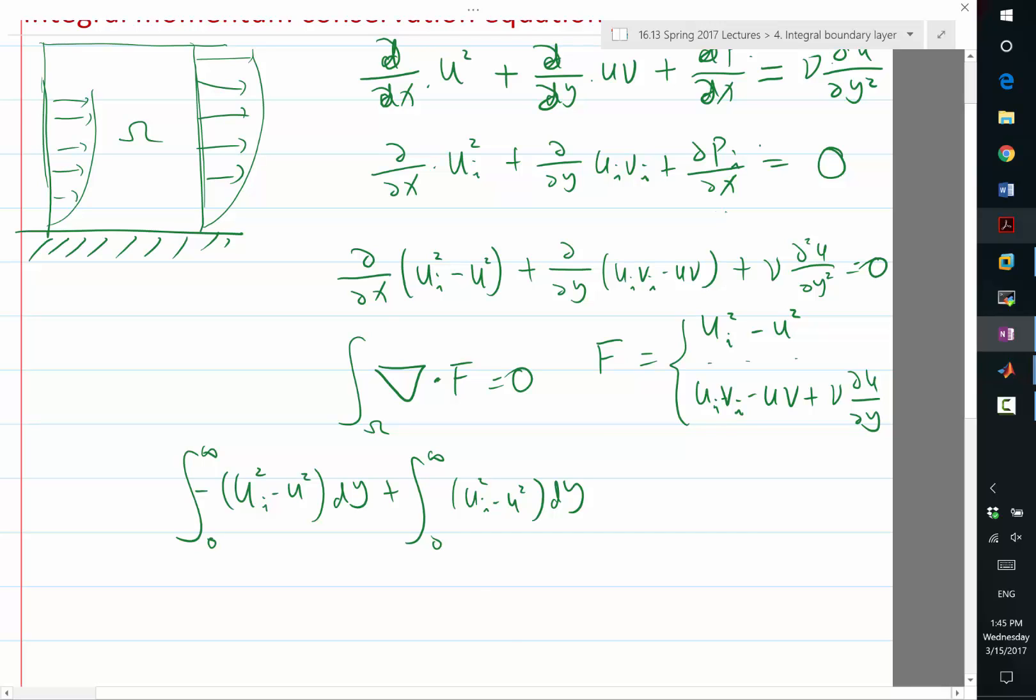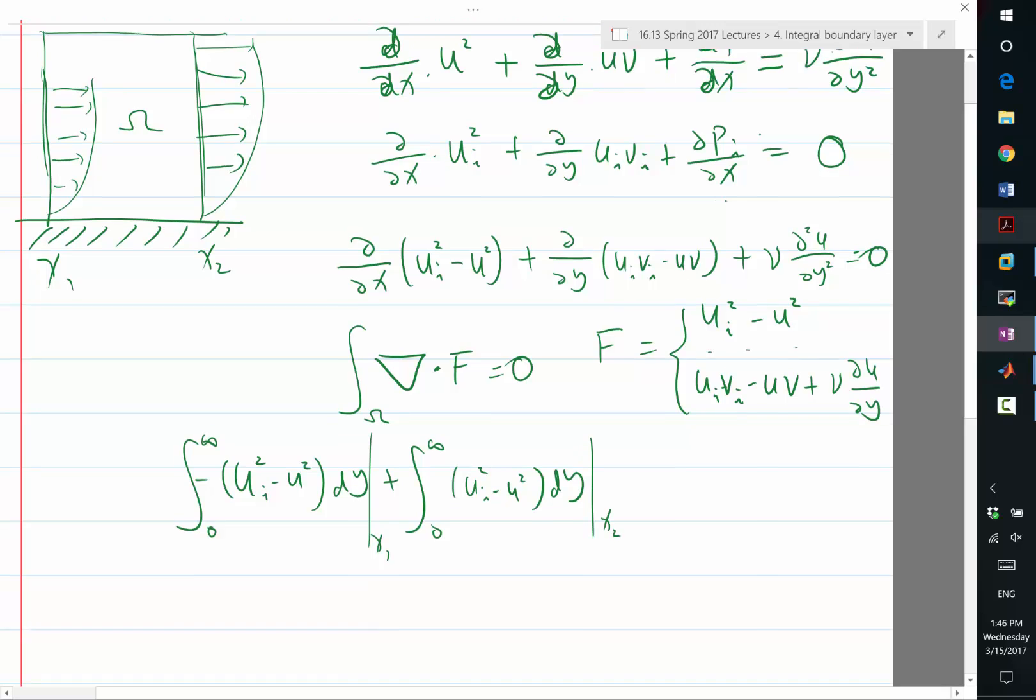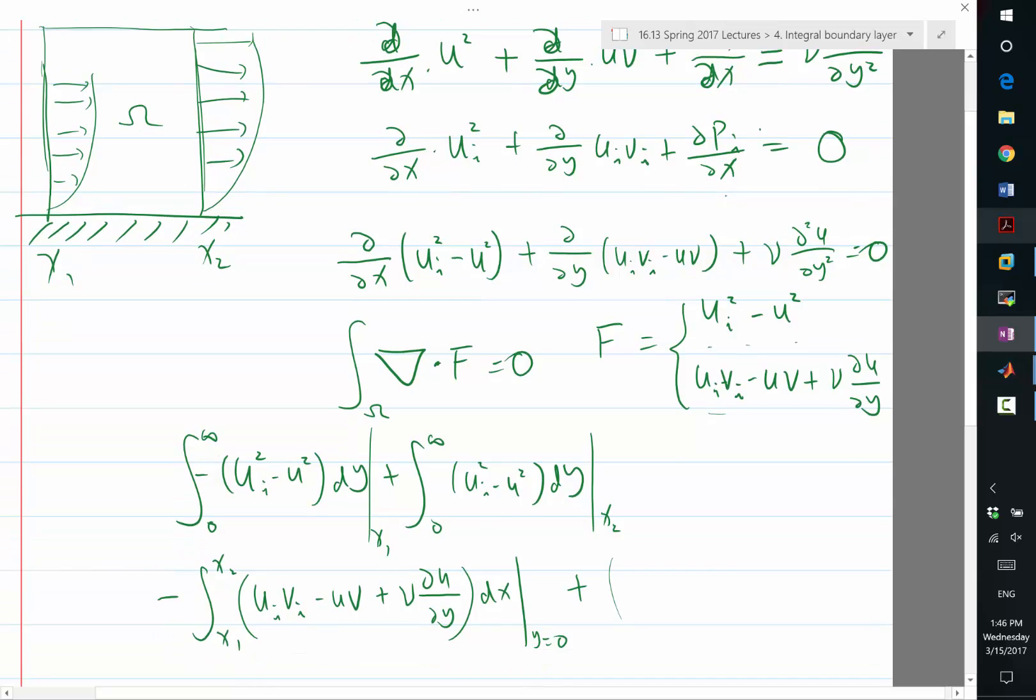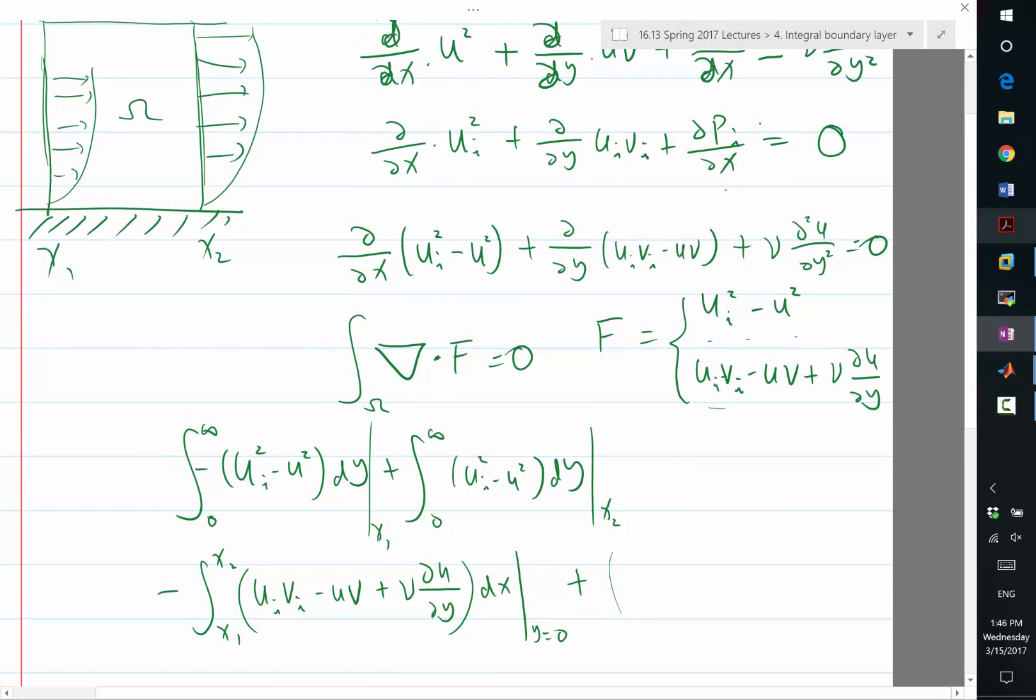Now I need to consider the y-directional flux. The first one is at x1 and the second one is at x2. I need to subtract integration from x1 to x2 of the y-vector, so ui vi minus uv plus nu partial u partial y dx at y equal to zero, plus the same thing at y equal to infinity. But what is that same thing at y equal to infinity? Zero again, because the ui vi agrees with u and v. And outside, viscous forces or du dy is basically zero. Well, at least the nu times du dy is almost zero. The viscous effect is small. So plus zero is equal to zero.